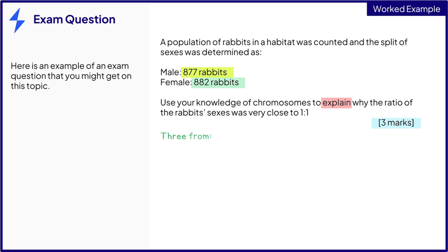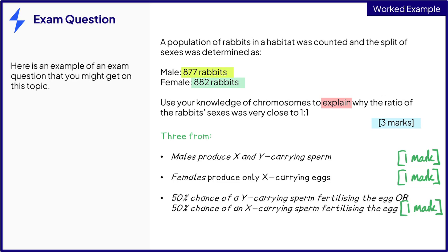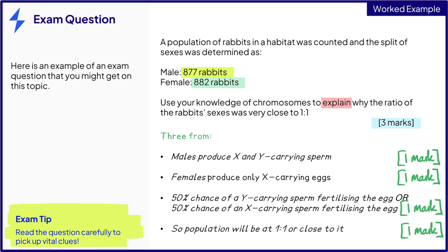Firstly, we can see that males produce an X and Y carrying sperm, for 1 mark. Females produce only X carrying eggs, for a second mark. This means that there's a 50% chance of a Y-carrying sperm fertilising the egg, or a 50% chance of an X-carrying sperm fertilising the egg — these points would give you 1 mark. Finally, we can explain that the population will therefore be at a 1 to 1 ratio. It's important to read the question carefully and make sure you pick up on the clues provided.